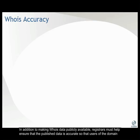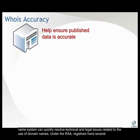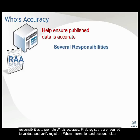In addition to making WHOIS data publicly available, registrars must help ensure that the published data is accurate, so that users of the domain name system can quickly resolve technical and legal issues related to the use of domain names. Under the RAA, registrars have several responsibilities to promote WHOIS accuracy.